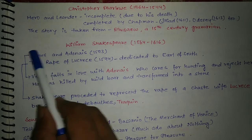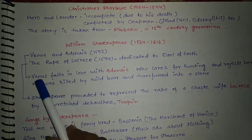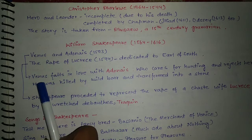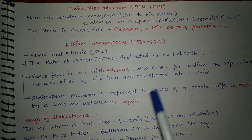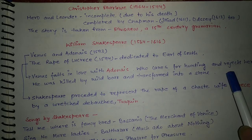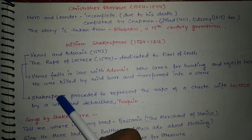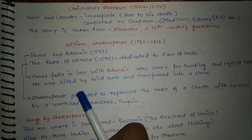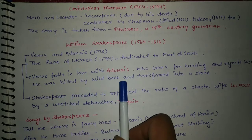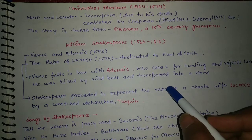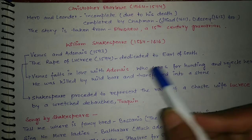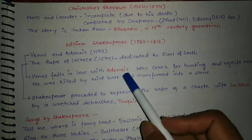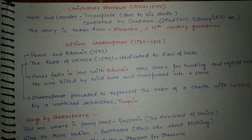In Venus and Adonis, Venus falls in love with Adonis, who cares only for hunting and rejects her love. He was later killed by a wild boar and transformed into a flower. This is the story of Venus and Adonis by Shakespeare.